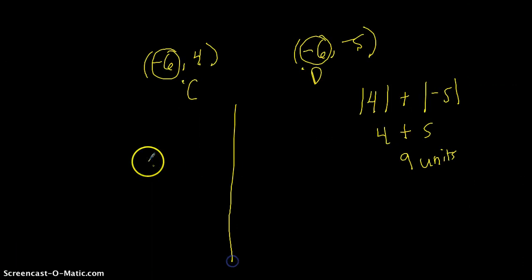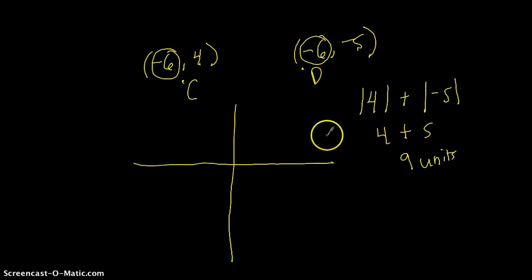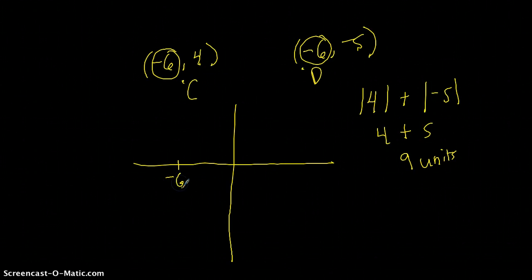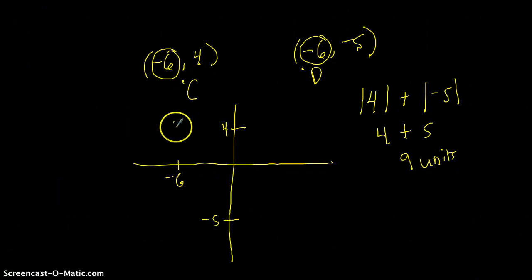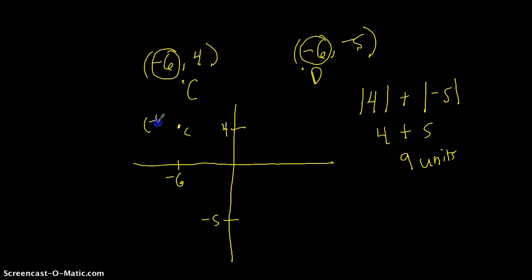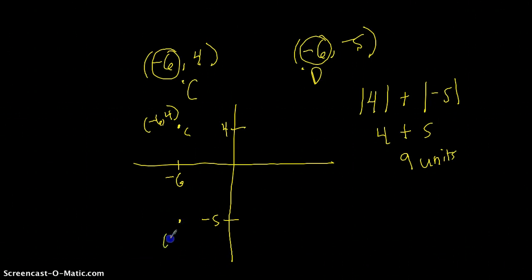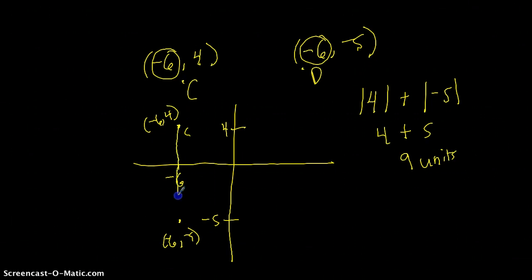If you want to see what that looks like on a coordinate plane: the y-axis is here, the x-axis is here. Negative 6 on the x-axis is about here, positive 4 on the y-axis is here, and negative 5 on the y-axis is here. So point C is at negative 6, 4, and point D is at negative 6, negative 5. The line segment passes right through negative 6, and that works out to be 9 units.